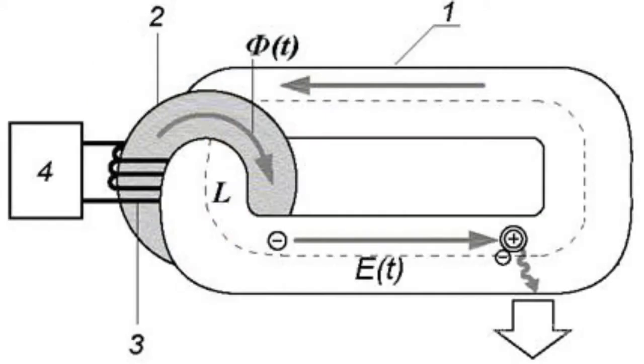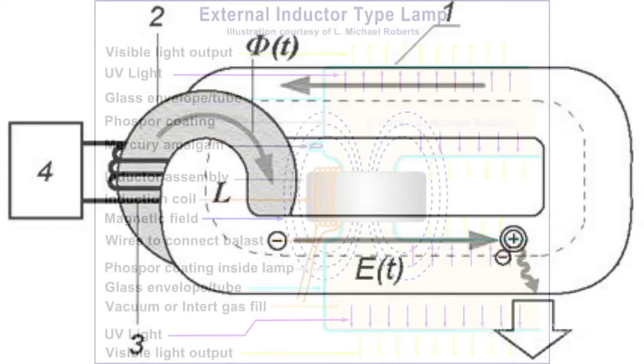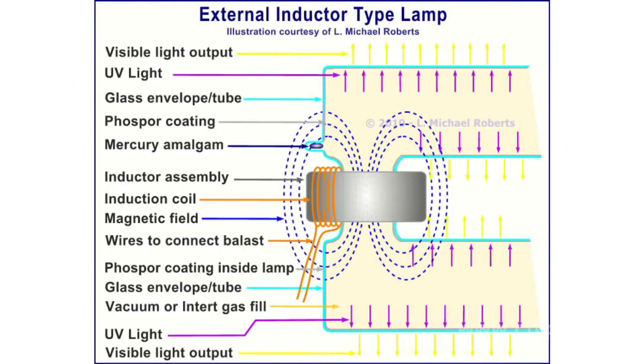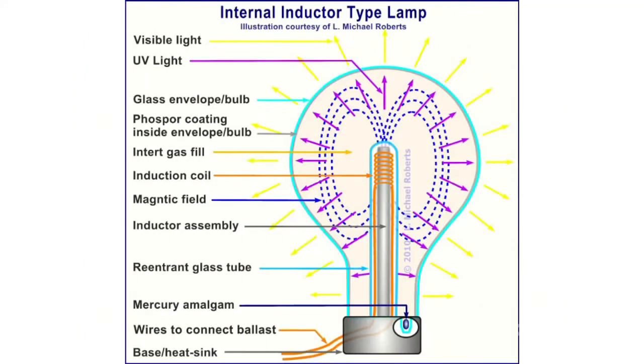By induction type, induction lamps can be of two design options: external induction lamps, where the magnetic ring is around the tube, and internal induction lamps, with a magnetic rod inside the tube.